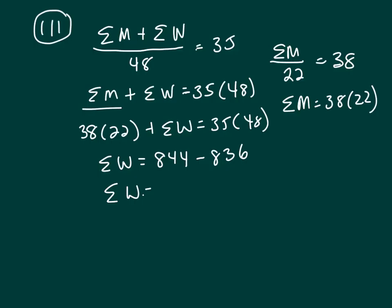Let me see, that's the wrong number. Hold on a second. 35 times 48 was 1680. Let me erase that. Picked up the wrong number. 1680 minus 836.